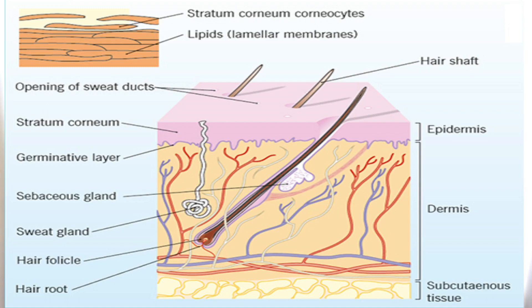Our skin is actually made up of two main layers: we have the epidermis and the dermis, and these two layers sit on top of a fatty layer and connective tissue. These layers are also broken down into more layers, but what we're going to focus on is the topmost layer of the epidermis, which is called the stratum corneum.